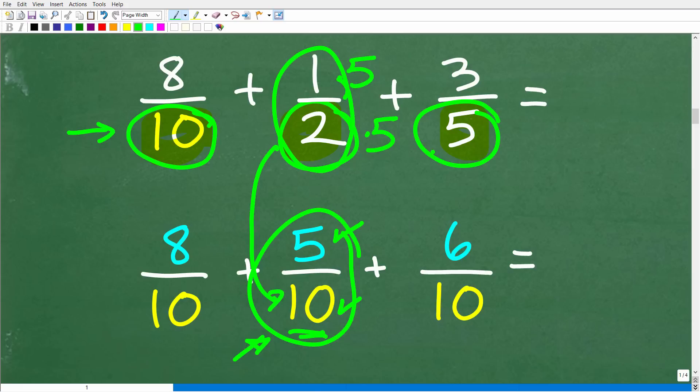How do we change a 5 into a 10? We just have to multiply that by 2. We also have to multiply the numerator by 2. 3 times 2 is 6, 5 times 2 is 10. Now we have 3 fractions with the denominator of 10.